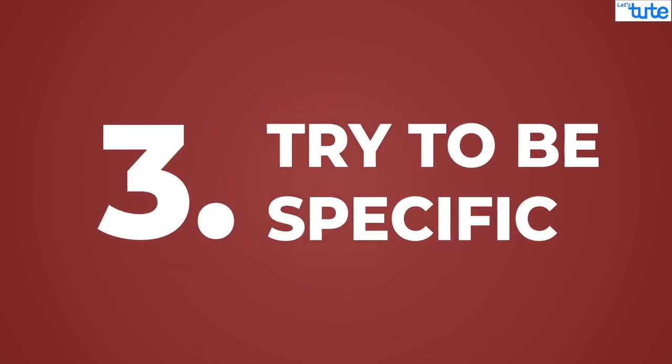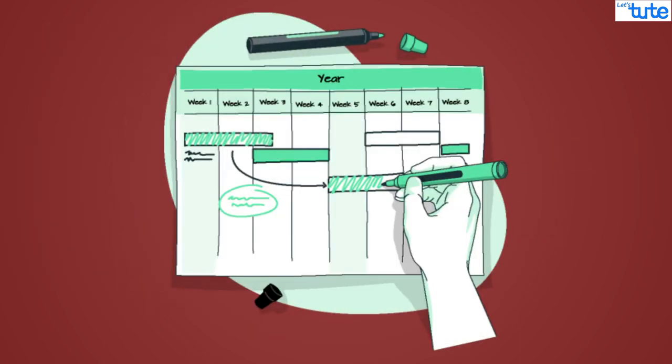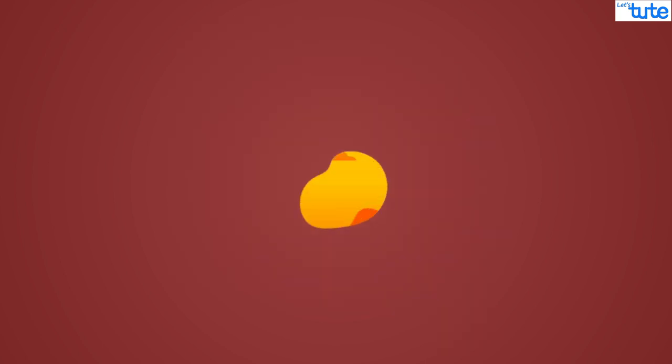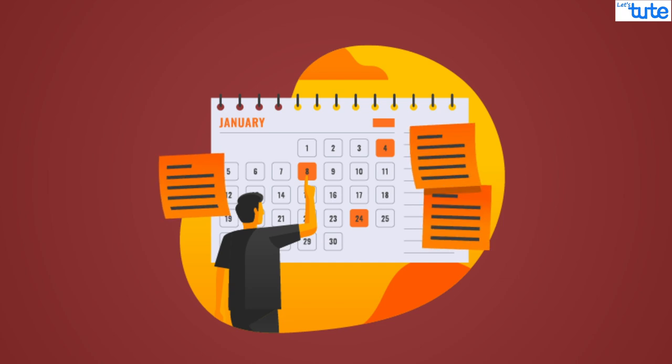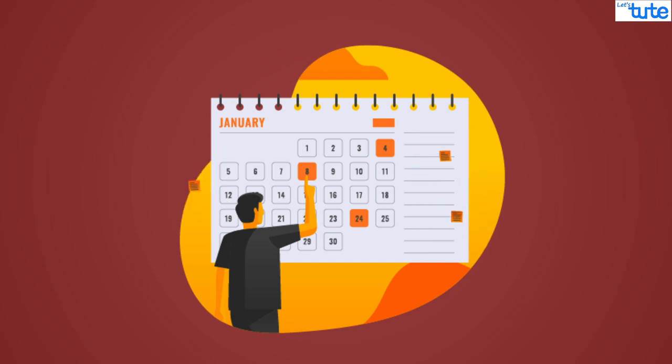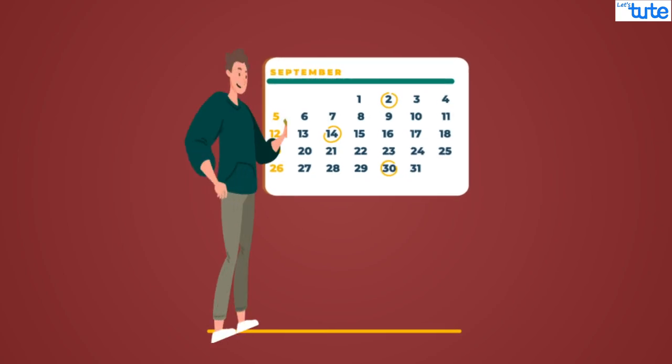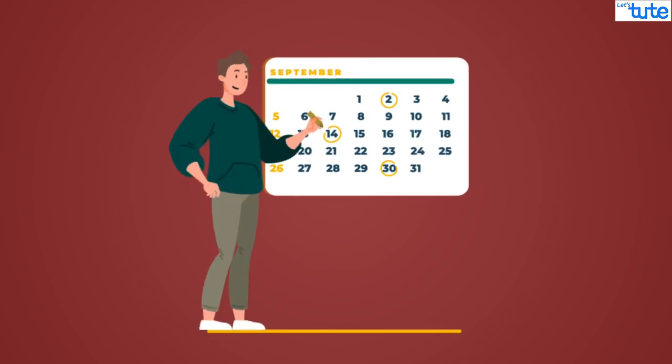Point number three: try to be specific. Don't fill in all the details in the format while preparing the timetable. Avoid filling unimportant things as much as you can. Make sure that you don't make it look crowded. Try to be more specific and short. Mark your important targets with a color marker so that it will help you to remember your goal.